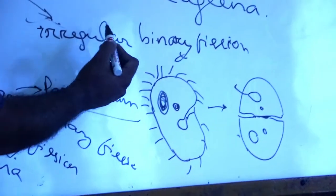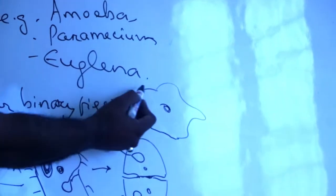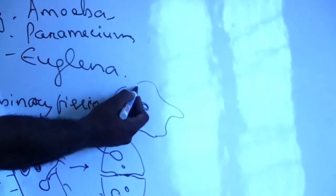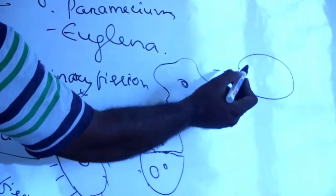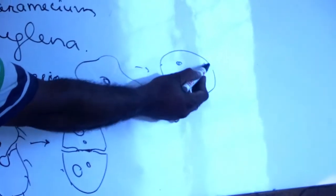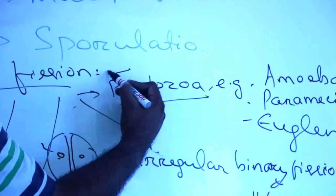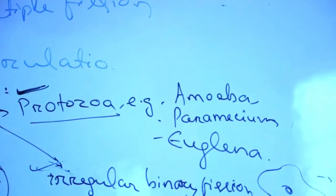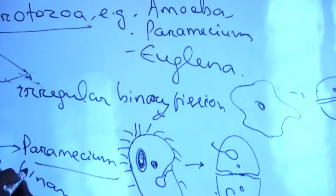Irregular binary fission is found in Amoeba. Amoeba is a common protozoan whose body is a single cell with many pseudopodia. During its reproductive stage it withdraws all its pseudopodia and becomes rounded. It then divides mitotically to form two daughter Amoeba. The mitotic division takes place in different directions, which is why it is called irregular binary fission. Amoeba performs irregular binary fission, Paramecium performs transverse, and Euglena performs longitudinal binary fission.